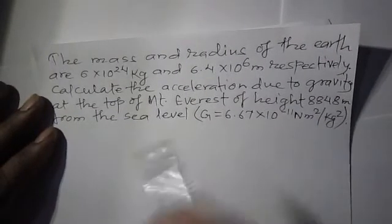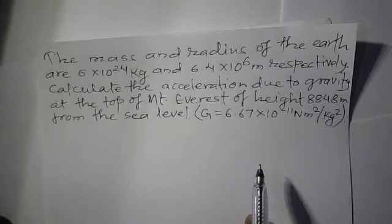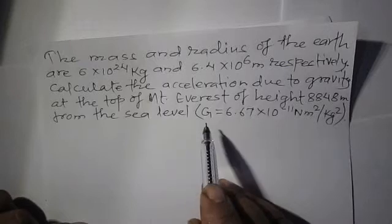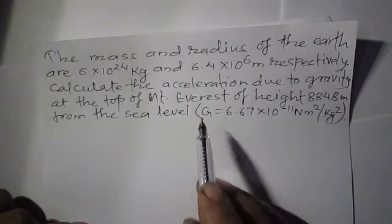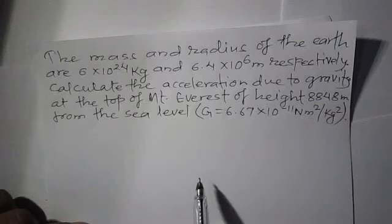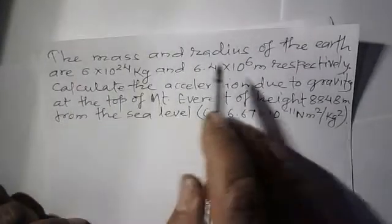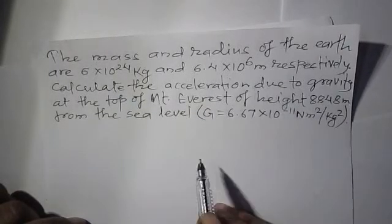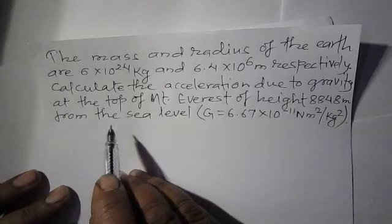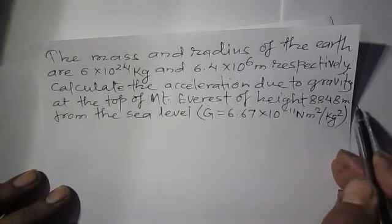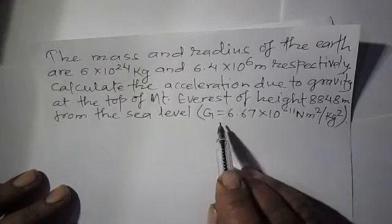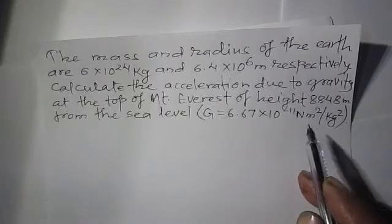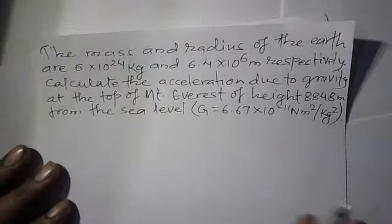I'm going to show you the solution of a numerical problem from the SLC examination. This is a question from SLC 2071, Eastern region of Nepal. The mass and radius of the earth are 6 into 10 to the power 24 kg and 6.4 into 10 to the power 6 meters respectively. Calculate the acceleration due to gravity at the top of Mount Everest of height 8848 meters from sea level. G equals 6.67 into 10 to the power minus 11 Newton meter squared per kg squared.